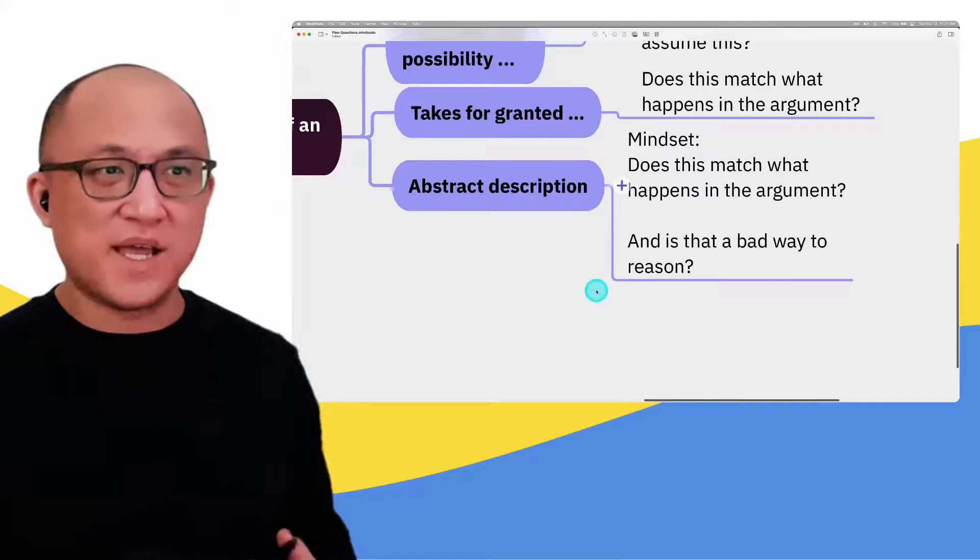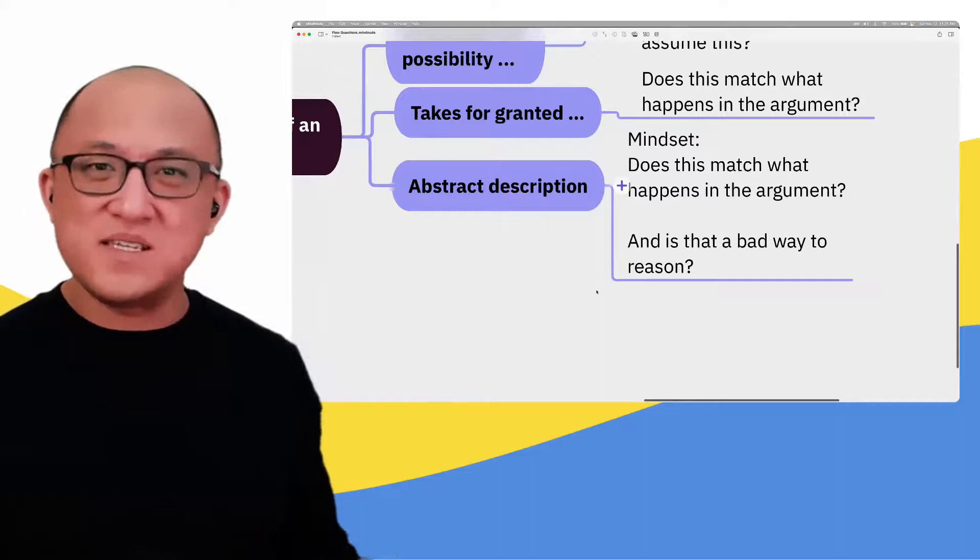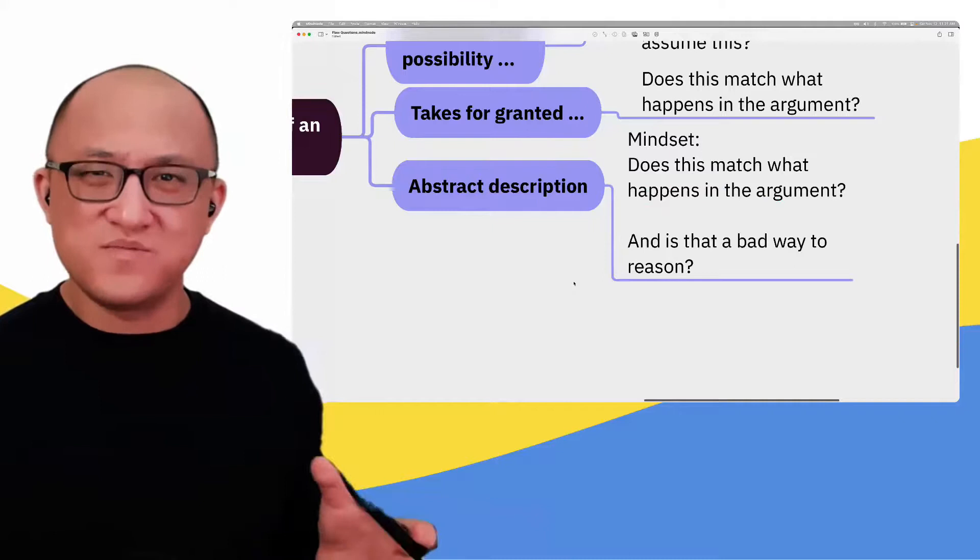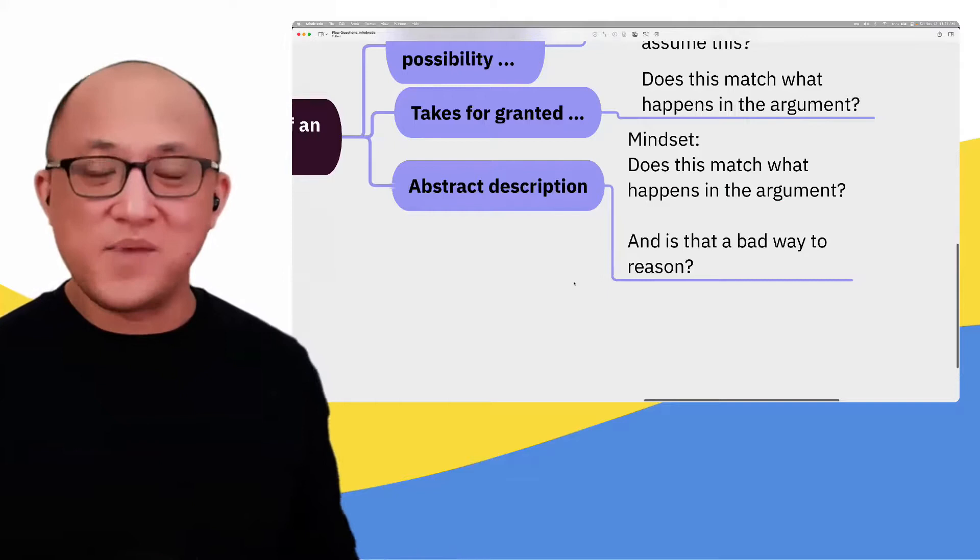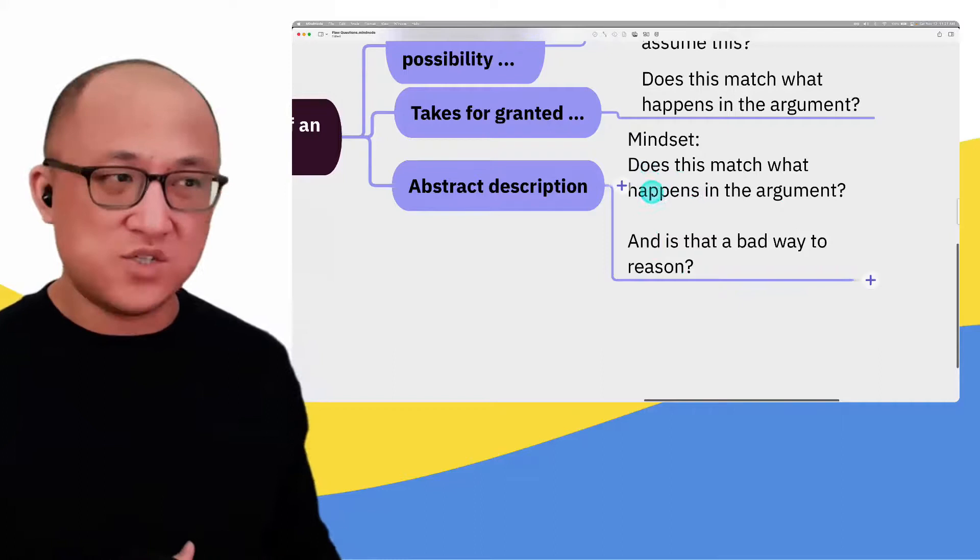That's pretty similar to the approach you would take for abstract descriptions. If I see an abstract description like 'infers that a particular approach is the best way to achieve a particular result,' my main question is: does this match what happens in the argument? Very often, with the first half of the answer, you think: can I point to where this happens in the premise or conclusion? If you can't find a match, then it's wrong, and you don't even have to consider whether that was a bad way to reason.